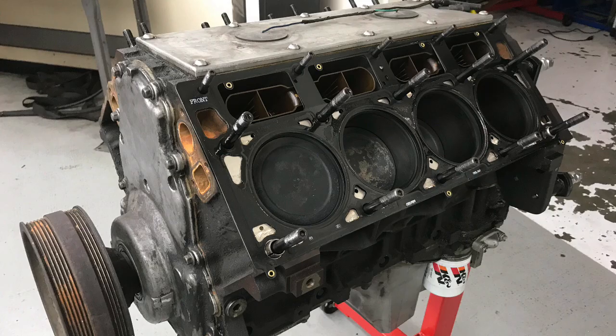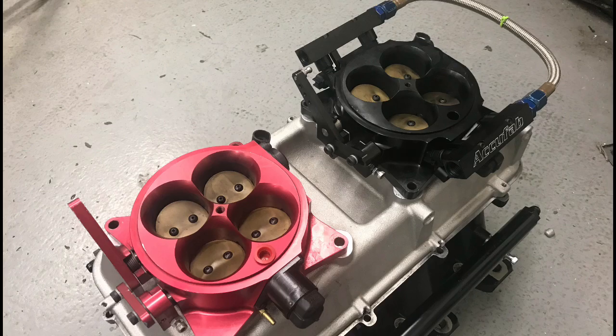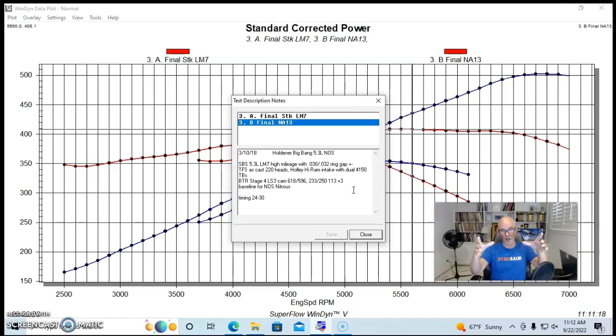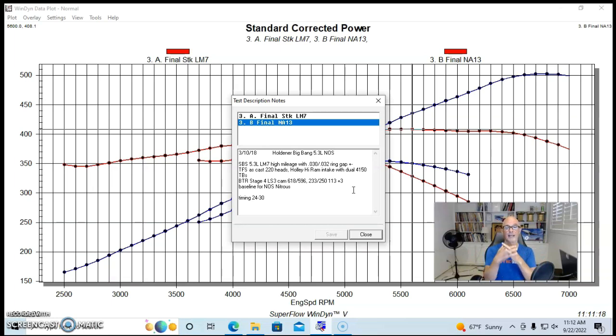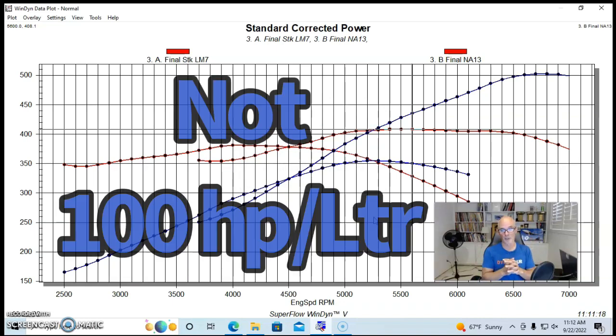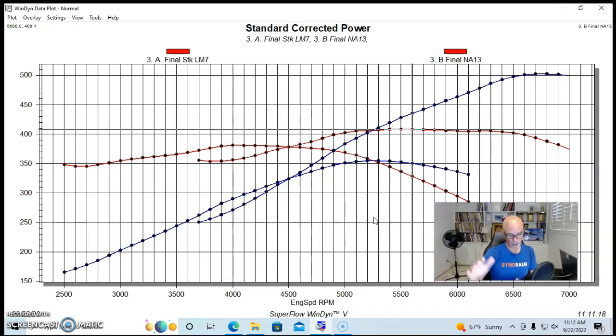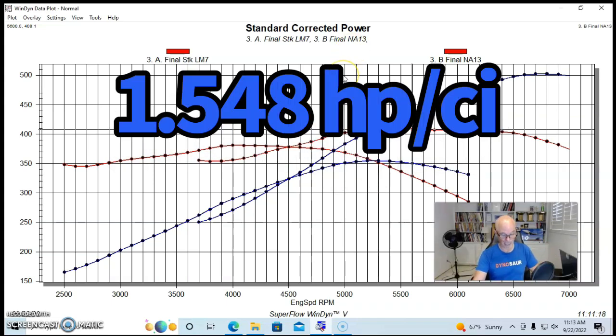We had the stock bottom end. We had ring gap in it. We had Trick Flow as-cast 220 heads, which are very good heads. We had a Holley Hi-Ram with dual 4150 throttle body, so in place of carburetors we put throttle bodies and we ran this fuel injected. We ran a fairly good size camshaft in it from Brian Tooley Racing. It was their stage four LS3 cam, which also doubles as a very good nitrous cam because as we saw, it makes very good peak power. That was 618/596 lift, 233 to 250 degree duration split at 113 plus three. And as I said, it worked very well with the nitrous oxide and we produced over 500 horsepower, although not quite making our number of 100 horsepower per liter, which would have put us at 530 horsepower. In fact, that puts us right at 94.9 horsepower per liter, or 1.547 horsepower per cubic inch.